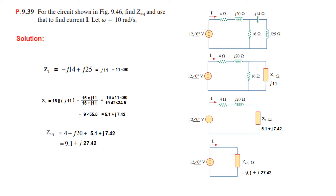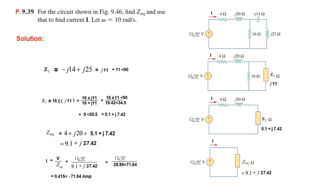Now we can find the current: voltage divided by total impedance. Voltage is 12, and we convert Z equivalent into polar form for division. 12 divided by 28.89 gives 0.415, and the angle becomes minus 71.64 degrees. Since a phasor current is required, we leave the answer in phasor form.